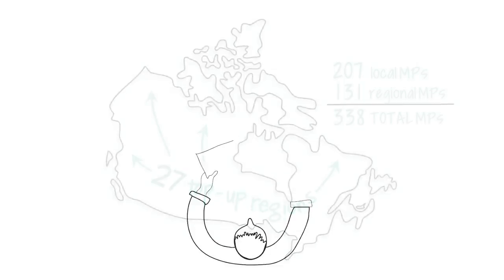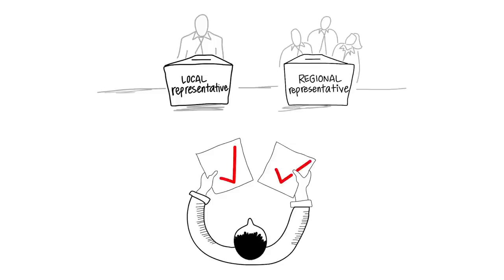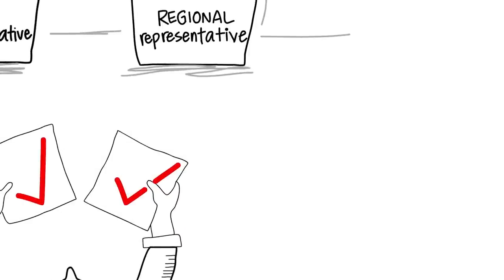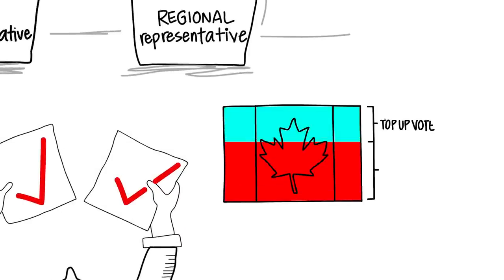Here's how the MMP system would work. The 207 local MPs would be elected just as our MPs are elected now. But at the same time that voters cast a vote for a local representative, they would also cast a vote for regional representation. These regional MPs would be used to top-up the results to accurately reflect the popular vote for the different political parties.